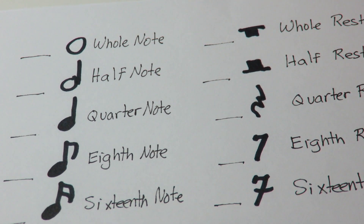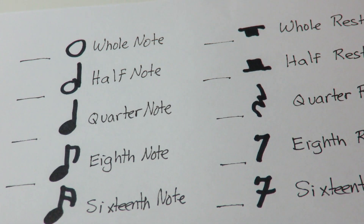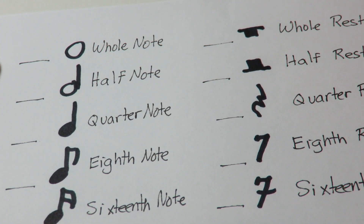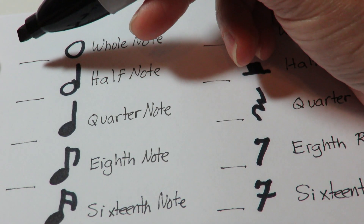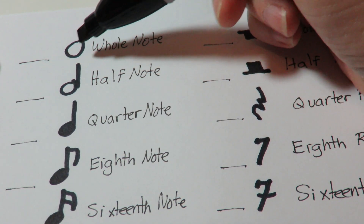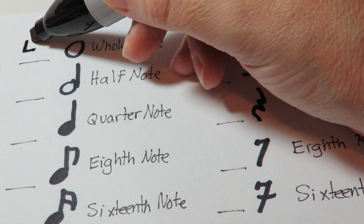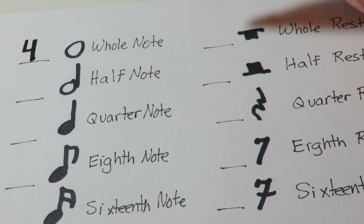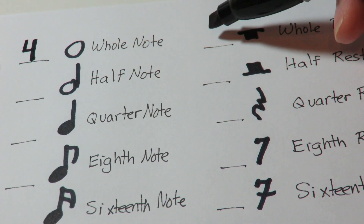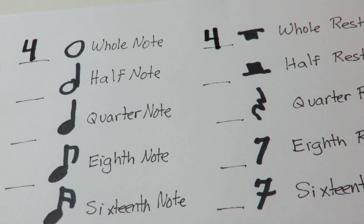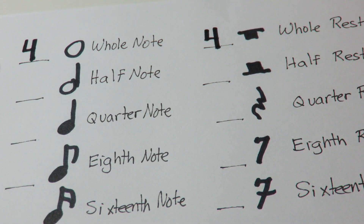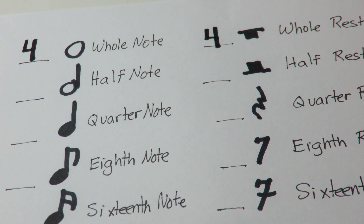Both partners will have the same number of beats, and you should write the numbers of beats on the left side of the symbol, right next to them. We're going to start with whole. Whole notes have four beats of sound and whole rests have four beats of silence — make sure that you have those written in.